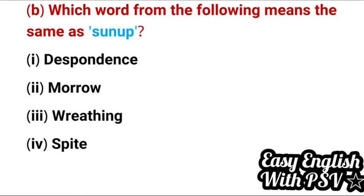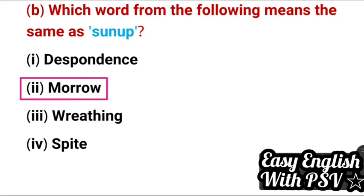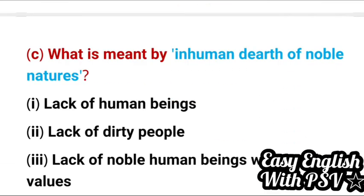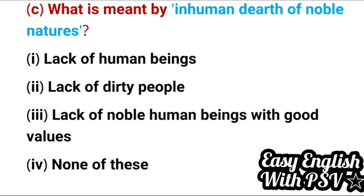Question 2: Which word from the following means the same as 'sunup'? 'Sunup' means dawn or prime. Options: despondence, morrow, redding, spite. Correct answer: morrow — meaning the next morning, which is like dawn or prime. Question 3: What is meant by 'inhuman dearth of noble natures'? 'Dearth' means lack or abhāv. Correct answer: lack of noble human beings with good values.